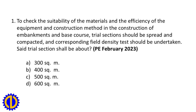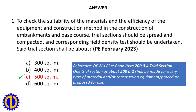Said trial section shall be about: a. 300 m², b. 400 m², c. 500 m², d. 600 m². Answer: c. 500 m². Reference: DPWH Blue Book Item 200.3.4 Trial Section — 1 trial section of about 500 m² shall be made for every type of material and/or construction equipment procedure proposed for use.